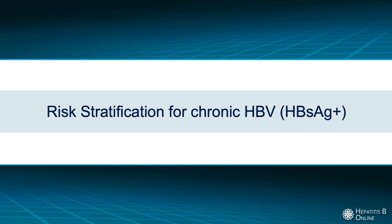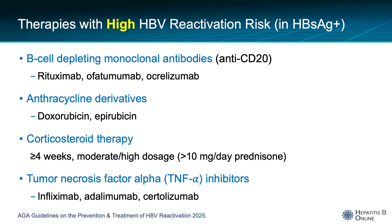So let's first look at those who have chronic hepatitis B. Therapies with the highest risk for HPV reactivation include B-cell depleting monoclonal antibodies that target the CD20 receptor of the B lymphocyte, used for treatment of lymphoma or autoimmune conditions such as multiple sclerosis; anthracycline derivatives, a class of chemotherapy that includes doxorubicin or epirubicin; and chronic moderate-to-high dose steroids, typically those comparable to 10 milligrams of prednisone or more daily for four weeks or more; and TNF-alpha inhibitors such as infliximab and adalimumab.